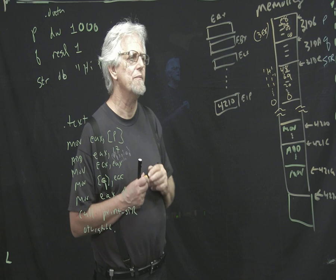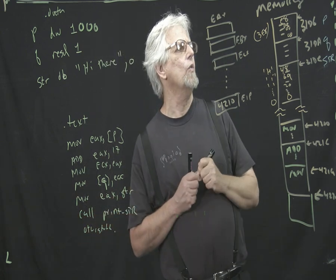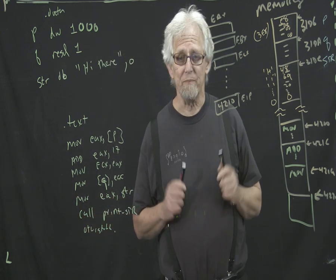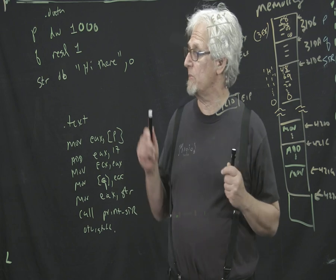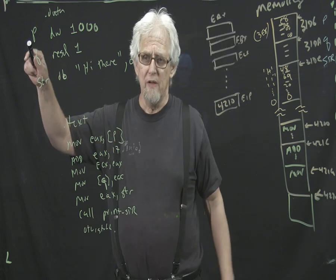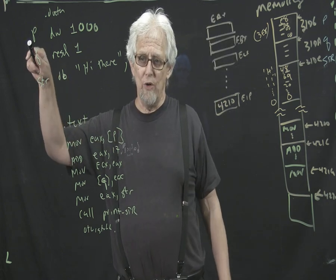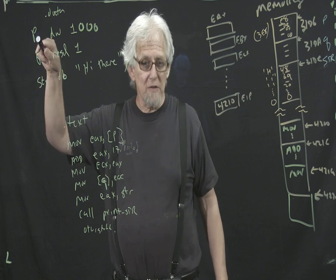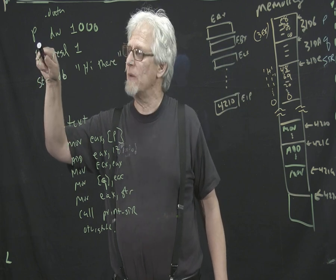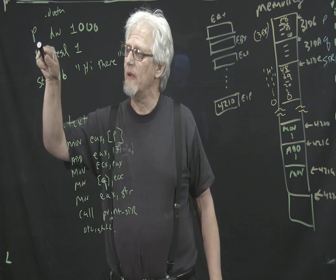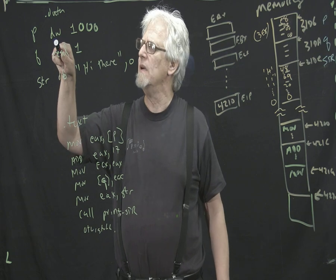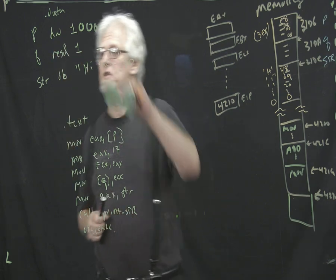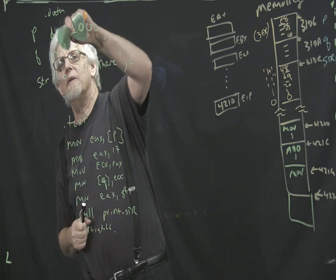So what does that look like in your program? Well, in your assembler program it looks like this. You have a variable called P. In assembler this is called a label, not a variable. And then DD — actually for 4 bytes I should have written DD. DD means define what's known as a D-word, and a D-word is 4 bytes.